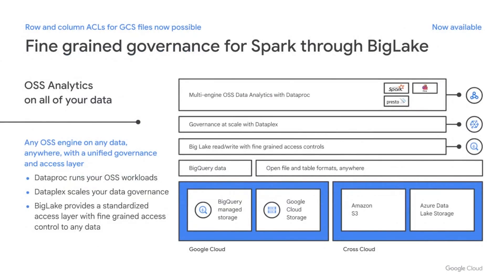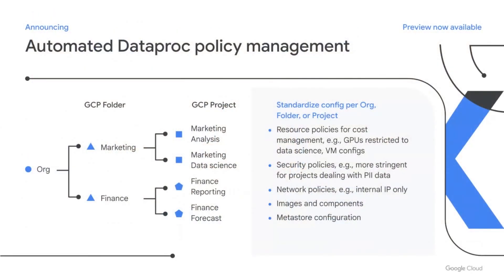Moving on to the security features. The most exciting is the ability to use Spark with a variety of open data formats and apply row and column level access controls to files in that format. This is achieved through Dataproc integration with Big Lake. Furthermore, you can govern all your data from a single pane of glass with Dataplex. We are also making it easy for you to create and apply policies for your fleet of clusters automatically — for resource management, security standardization, or standardization of components you want within your Dataproc clusters at a project level, and you can manage them across your organization.